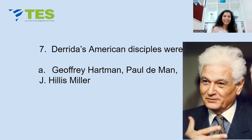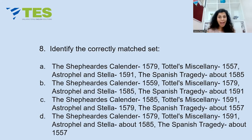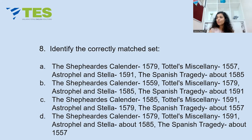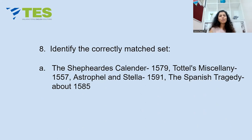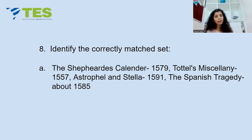Question 8: Identify the correctly matched sets — works and their publication dates: 'The Shepherd's Calendar,' 'Tottel's Miscellany,' 'Astrophil and Stella,' and 'The Spanish Tragedy.' The answer is Option A: 'The Shepherd's Calendar' published in 1579, 'Tottel's Miscellany' in 1557, 'Astrophil and Stella' in 1591, and 'The Spanish Tragedy' around 1585. These dates for important works are essential to remember — you can't escape dates and chronologies.